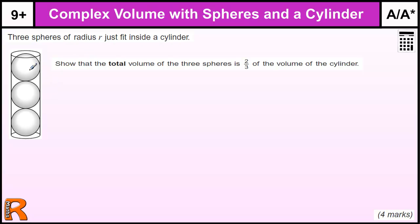We've got three spheres of radius R. These spheres have a radius of R, so the distance from the center to the outside is R.